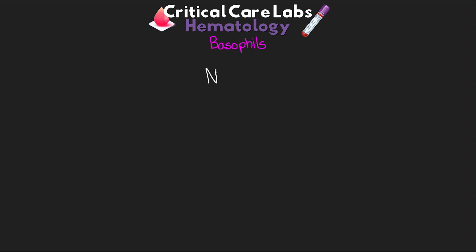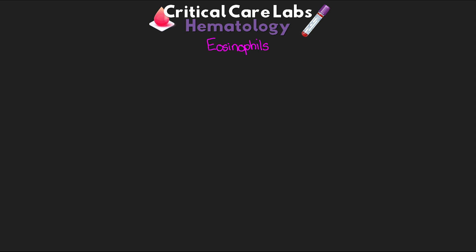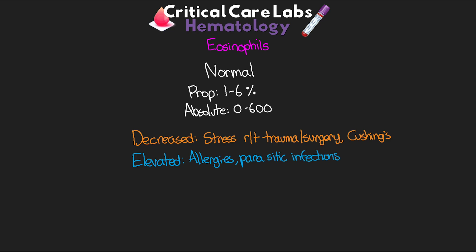The next cell is our basophils. Normal proportional amount should be 0 to 2%, with an absolute value of 0 to 200. We can see decreased basophils in hyperthyroid and pregnancy, and elevated levels with leukemia, Hodgkin's, polycythemia vera, and ulcerative colitis. Next, let's talk about our eosinophils. Normal proportional value is 1 to 6%, and absolute should be 0 to 600. We see decreased eosinophils in stress due to trauma, surgery, and Cushing's, and elevated eosinophils in allergies, parasitic infections, some skin diseases, as well as Hodgkin's and leukemia.